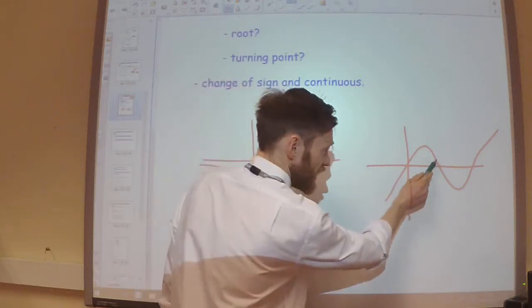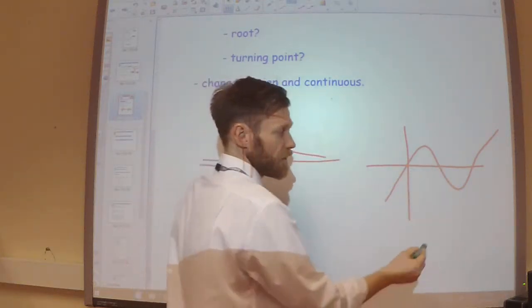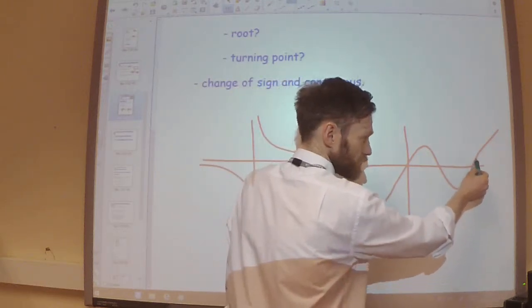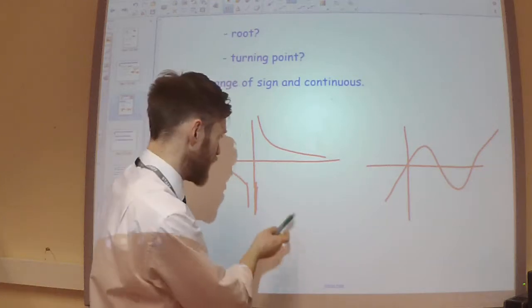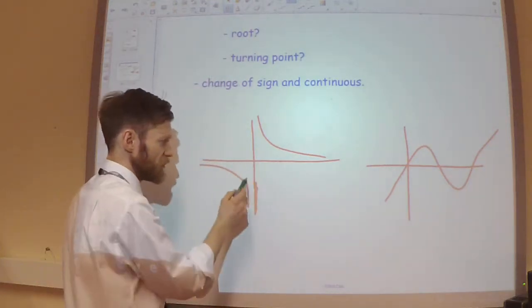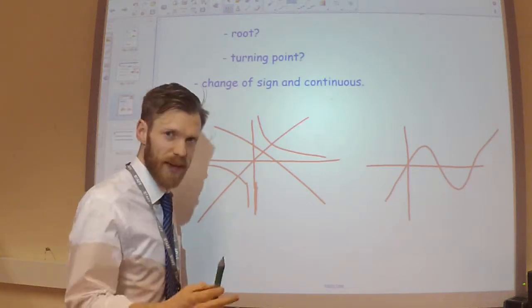So if I have a sign change here and here, yeah, there's a root there because it's continuous. If I have a sign change here and here, yes, there's a root there because it's continuous. But here, there's a sign change but it's not continuous. There's no roots there. Just bear that in mind.